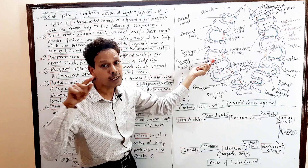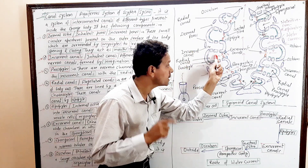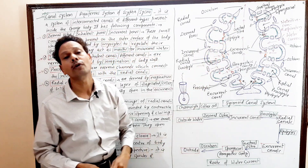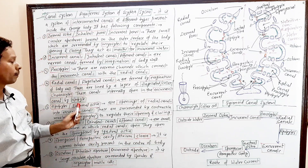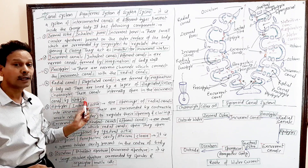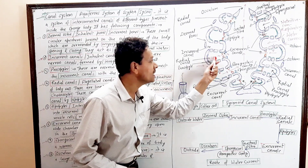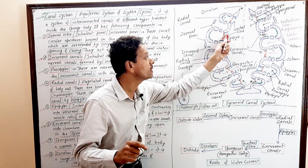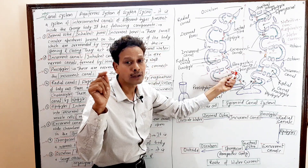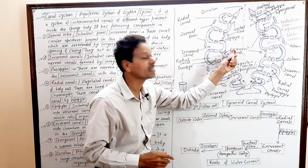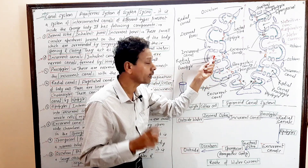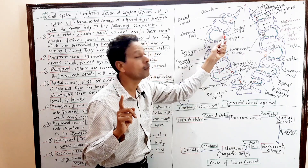Between Incurrent Canals and Radial Canals, the apertures are Prosopiles. Radial Canals also have very small apertures — these are called Apopyles. So the order is: Dermal Ostia → Incurrent Canals → Prosopiles → Radial Canals → Apopyles → Excurrent Canal.